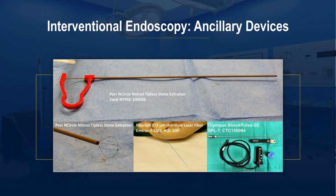Here are examples of devices that can go through the scopes. The enCircle grasping device or red-handled graspers are essentially basket devices particularly good for grabbing small stones or foreign bodies and removing them. This contrasts with the Holmium laser fiber, which is used for actually fragmenting stones anywhere in the body — in the biliary tree, gallbladder, or kidneys. One of the lithotriptor devices shown is particularly useful for shattering or breaking stones in the gallbladder or genitourinary system.